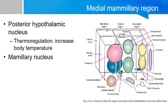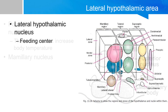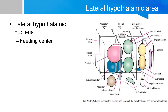The posterior hypothalamus contains the mammillary region. Its two principal nuclei are the posterior nucleus and the mammillary bodies. The posterior hypothalamic nucleus is involved in thermal regulation — specifically increasing body temperature, in contrast to the anterior hypothalamic nucleus which decreases it. Laterally, the lateral hypothalamic nuclei form the feeding center, telling you that you are hungry and should eat more, which is the opposite of the ventromedial satiety center.